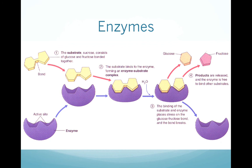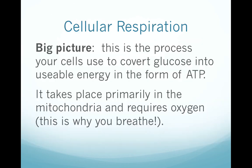The substrate is whatever molecule or compound the enzyme is acting upon. When the substrate binds to the enzyme, the enzyme modifies its shape slightly to fit tighter to the substrate — this is called the induced fit model. When this occurs, the enzyme puts stress on the substrate's chemical bonds, making them easier to modify or break. The reaction occurs and the products are released. The enzyme is not used up and can do its job indefinitely. Increasing temperature speeds up the reaction, but too much heat will denature the enzyme so it no longer works.